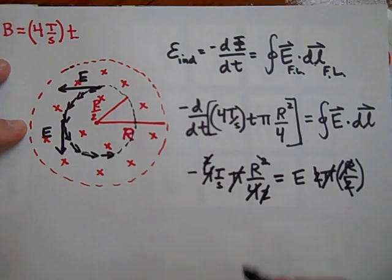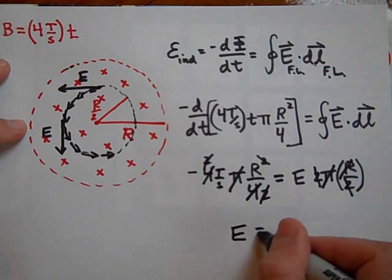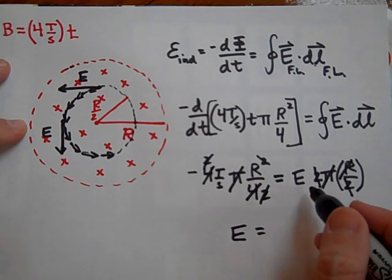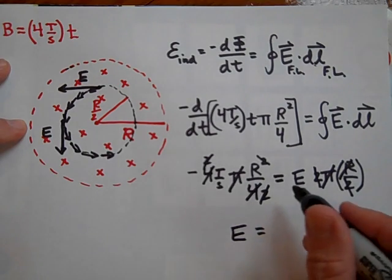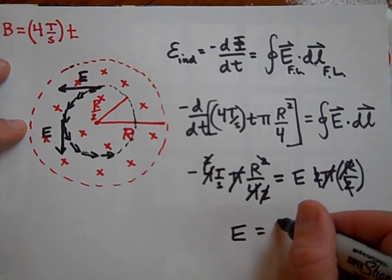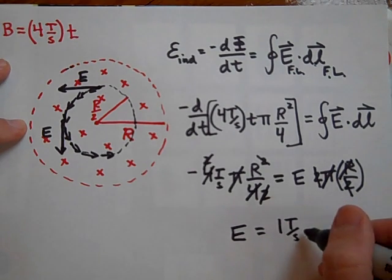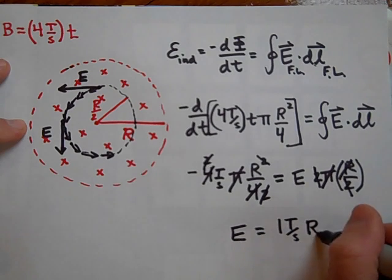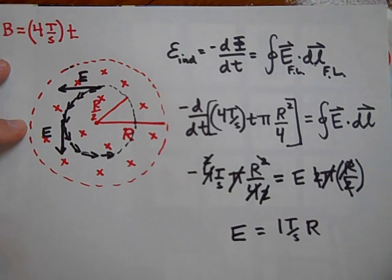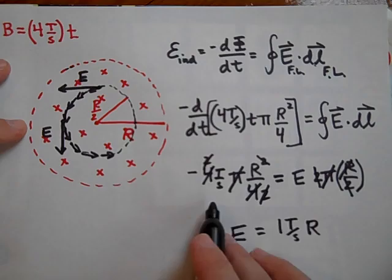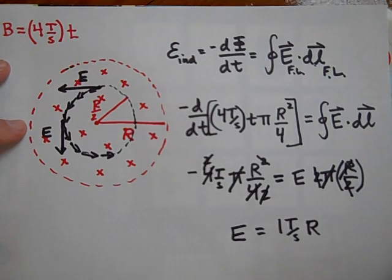And then we have a 2 and a 2, so those disappear. So the E is going to be equal to—is it just equal to 1 Tesla per second times R? I think so, if I did my math right.